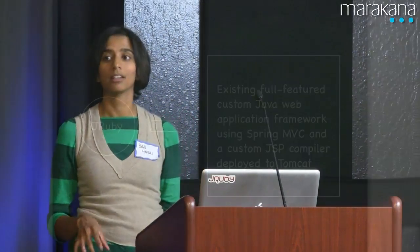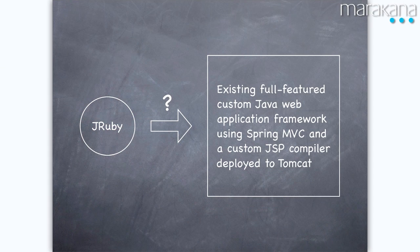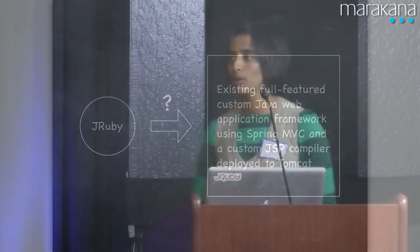This is a five-mile-high view of LinkedIn architecture. We've got the front end, which is basically a bunch of individual web applications running on different machines in different Tomcat instances. Each of these web applications depends on a variety of backend services, and these service calls are done in a parallel asynchronous fashion. So we needed to be able to implement that in JRuby.